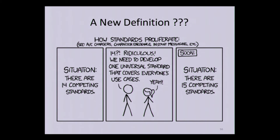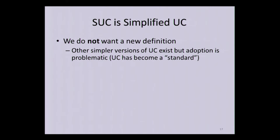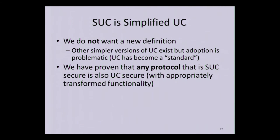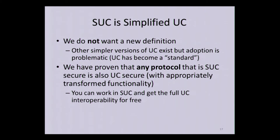So one thing you may be thinking is: okay, you've given us another definition. We had UC, JUC, GUC, GNUC — now we have 15 definitions. But that's exactly what we are NOT doing. There are simpler versions of UC floating out there, but we are not trying to come up with a different definition. Rather, what we've proven — and this is the most important part of the paper — is that if you work in this simpler variant of UC and prove security there, you get full UC security for free.